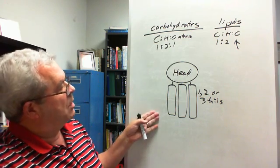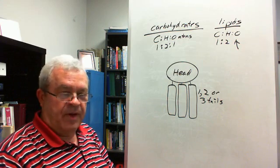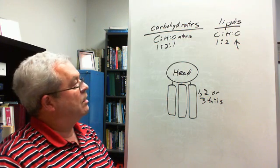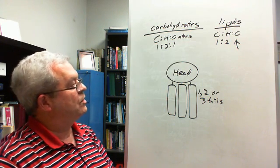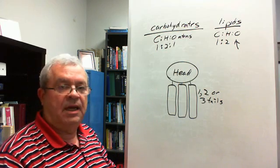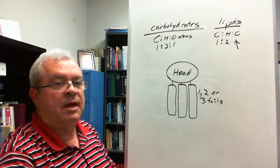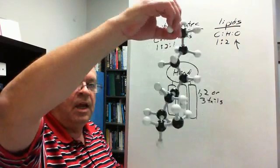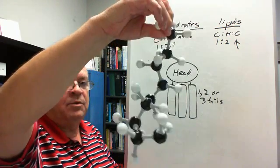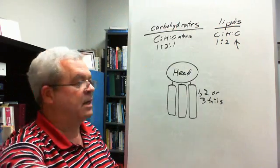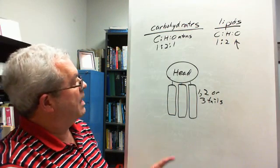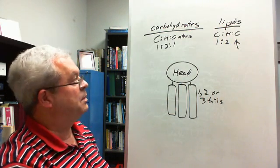And then we saw that lipid molecules, fat and oil molecules in particular, have a head-tail structure. A head that's some C, H and O atoms and a tail that's pretty much a chain of carbon atoms with hydrogen atoms attached. And so that is the basic structure of a lipid molecule.